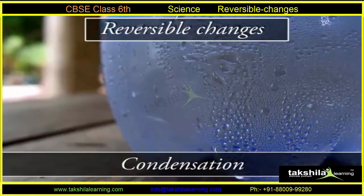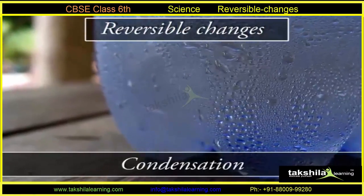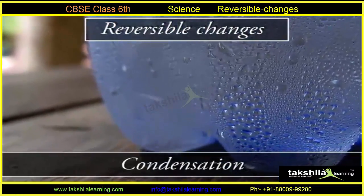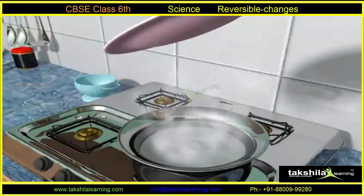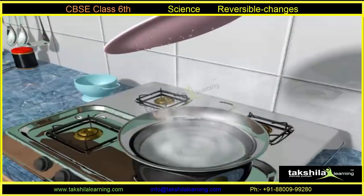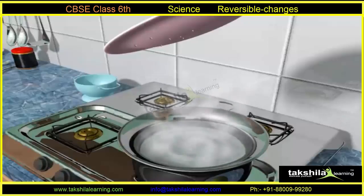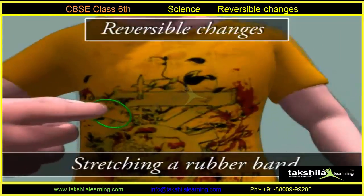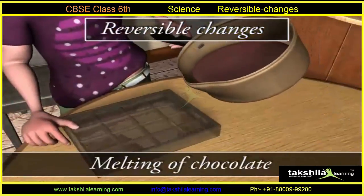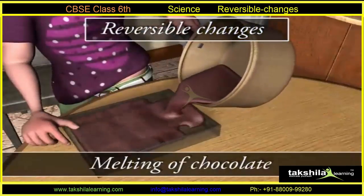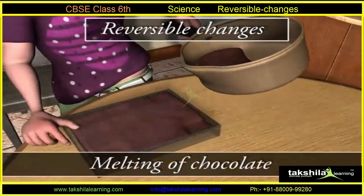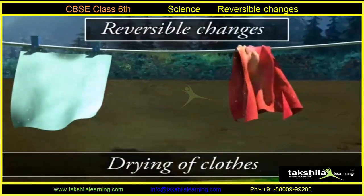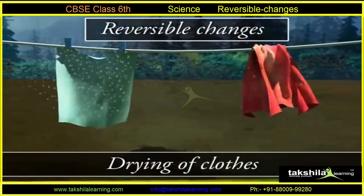Evaporation and condensation are all examples of reversible changes. For example, if you capture all the steam that is made when water is boiled, you can turn it back into water by cooling. Stretching a rubber band, melting of chocolates, and drying of clothes are some more examples of reversible changes.